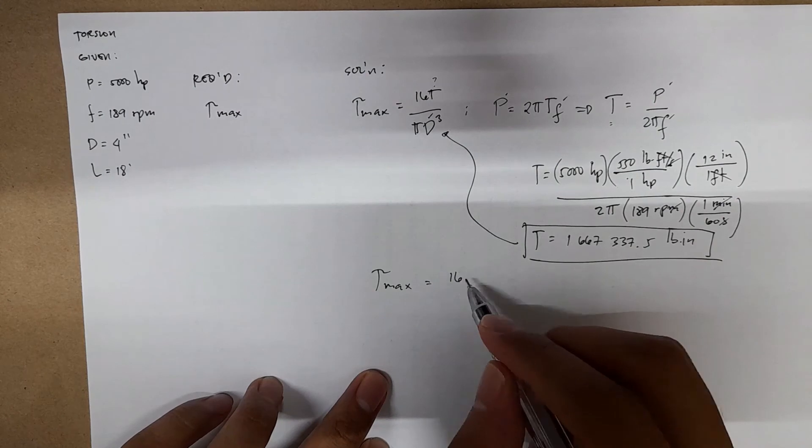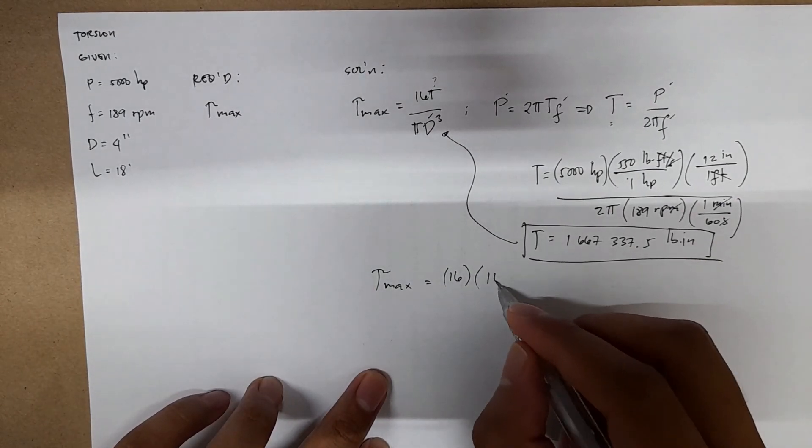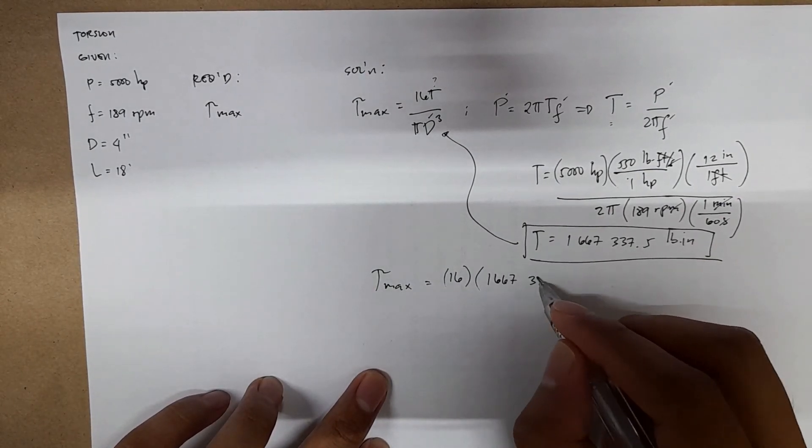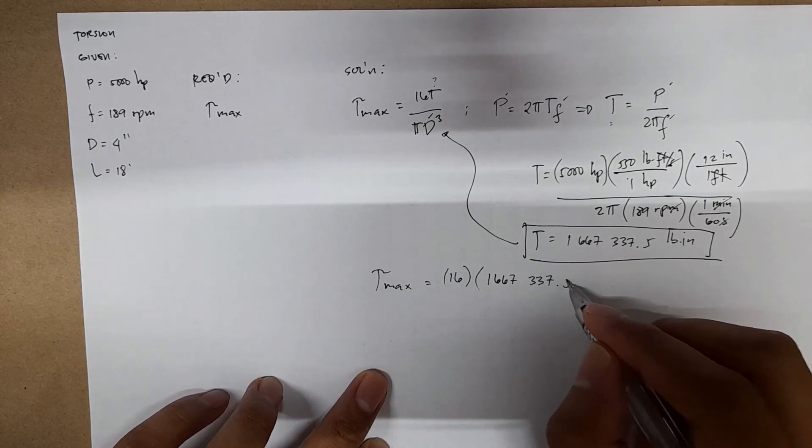This is equal to 16, your torque is 1,667,337.5 pound inch.